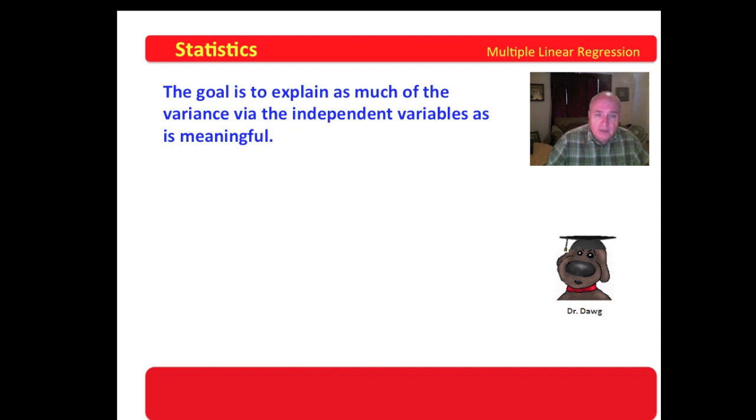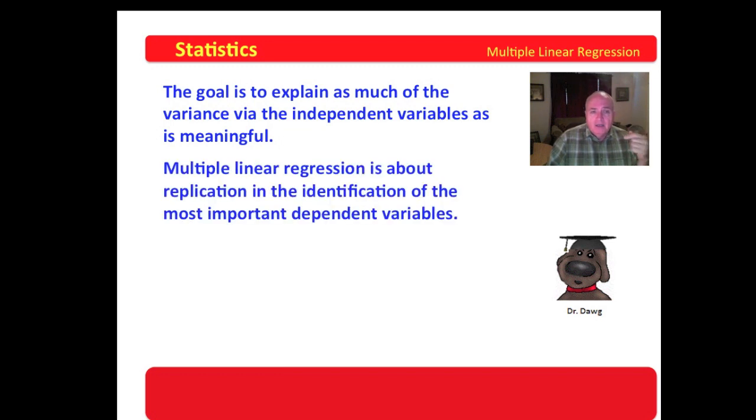The goal is to explain as much of the variance via the independent variables as is meaningful. Now, notice the word meaningful. To explain 100% of the variance, you have to explain everything. And that's just not possible. It's never possible to explain 100%. But how much is meaningful? What if you found a good 75% fit model? Multiple linear regression is about replication and the identification of the most important independent variables. Which one is the most important in impacting the dependent variable? Once you identify one, you freeze it, and then you examine the others.